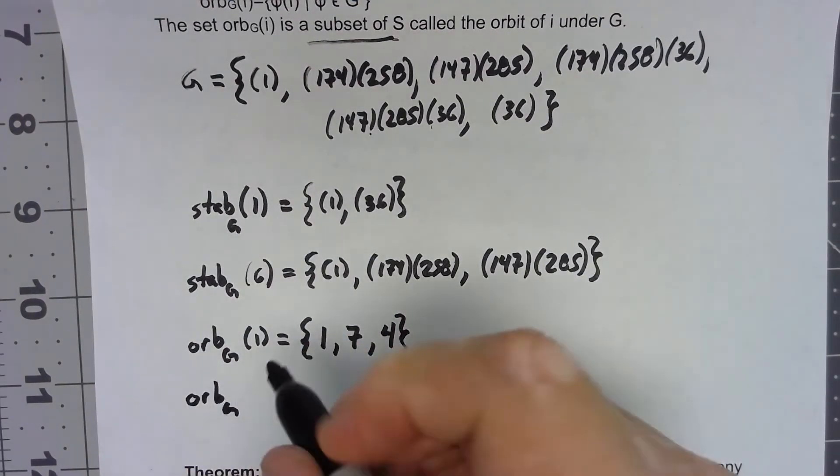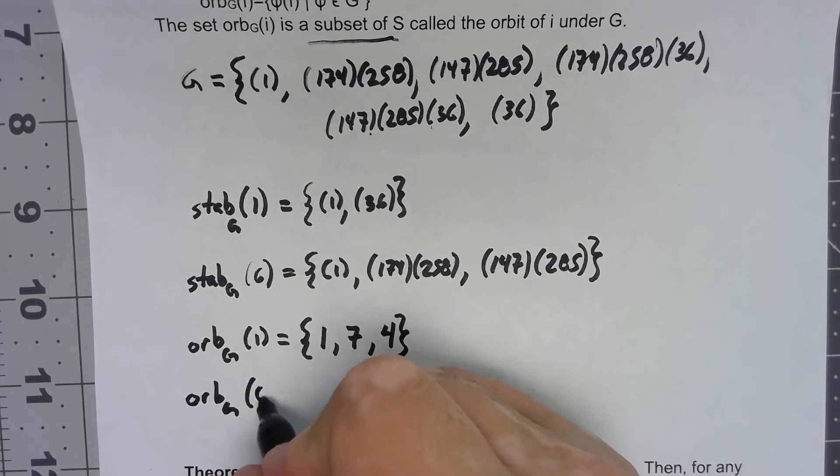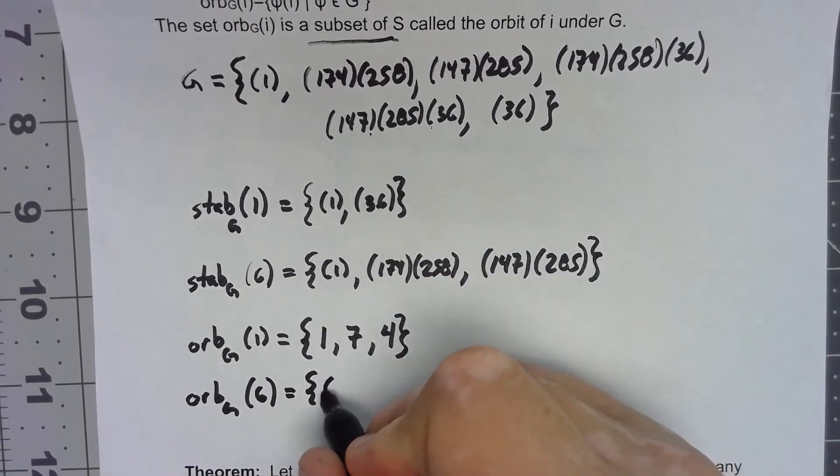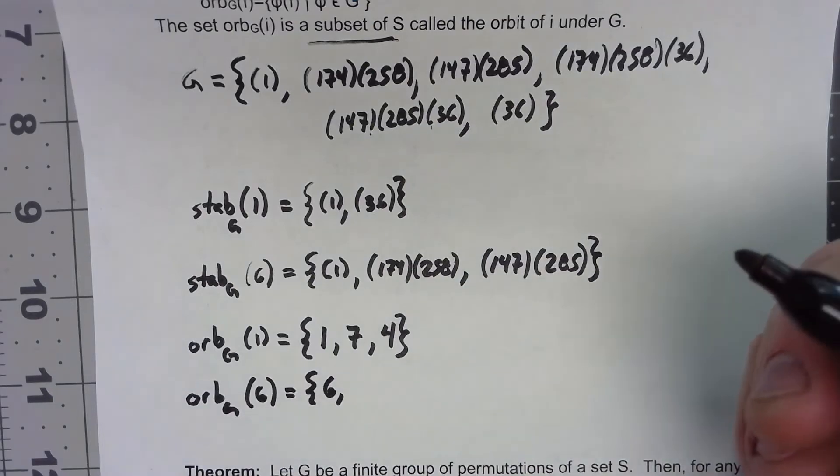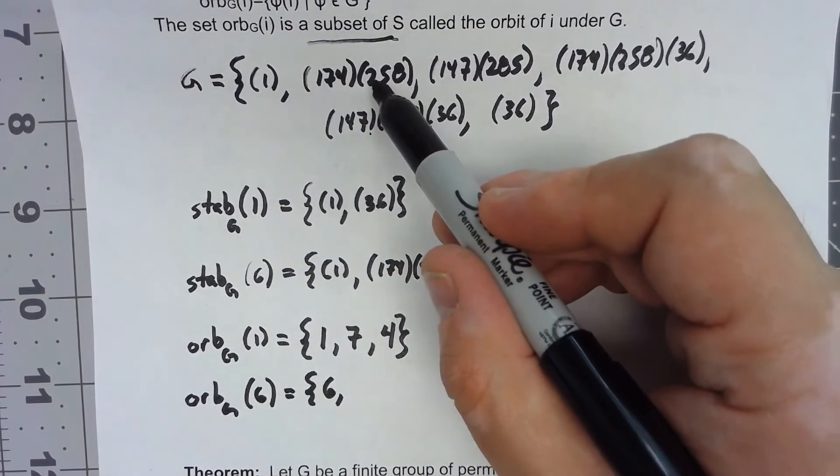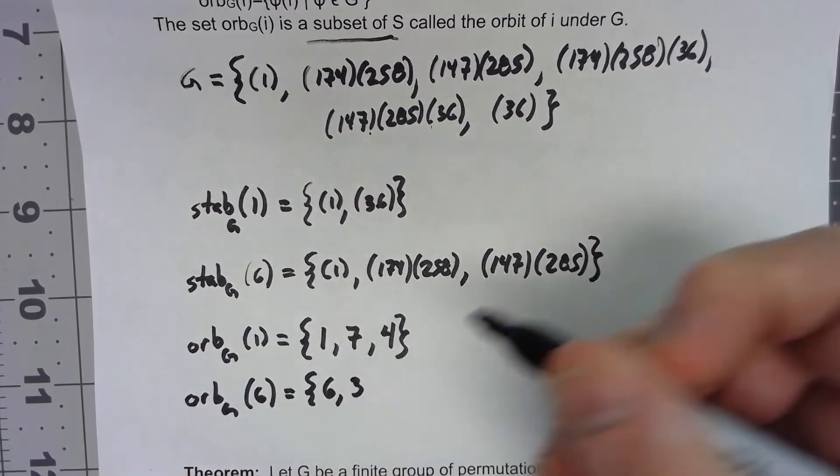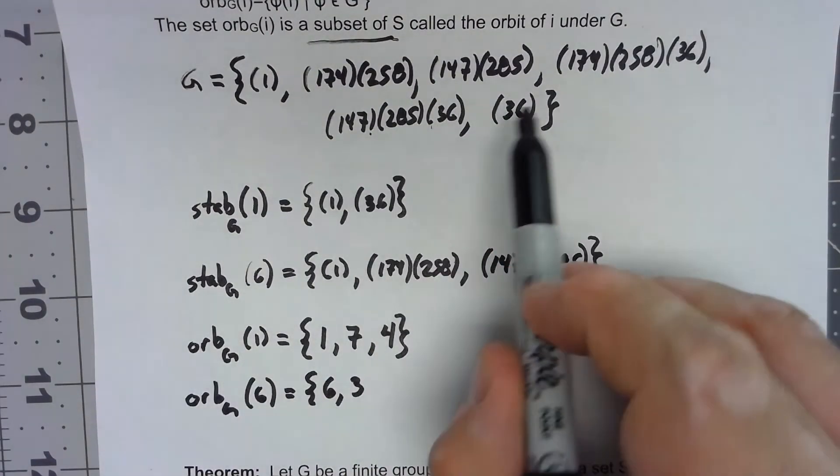The orbit in G of six. The identity maps it to six. This maps it to six. This maps it to six. This maps six to three. This maps six to three.